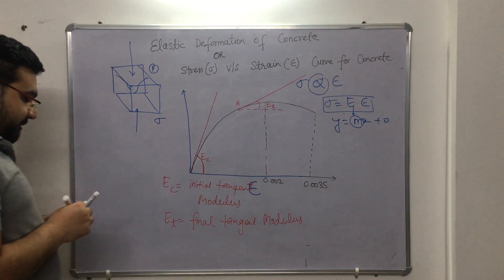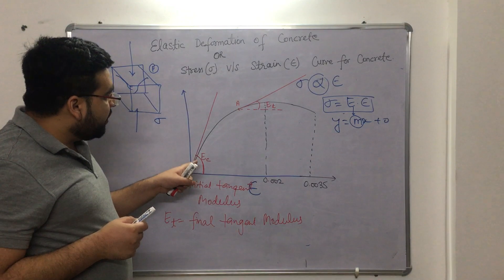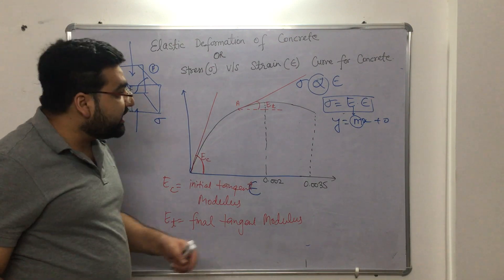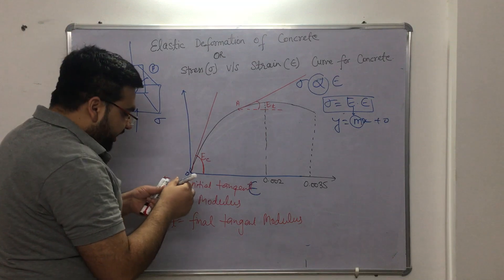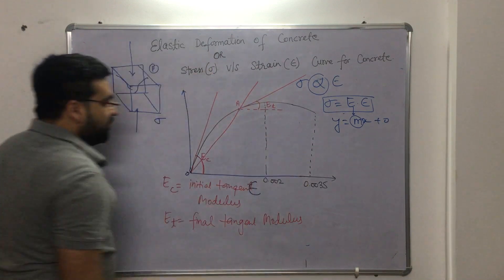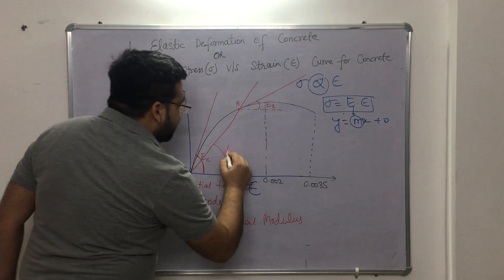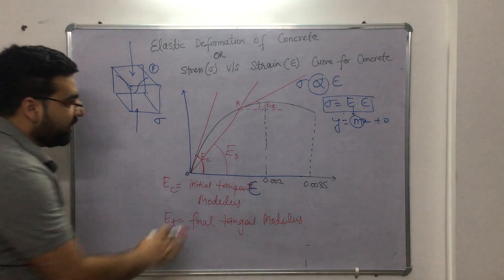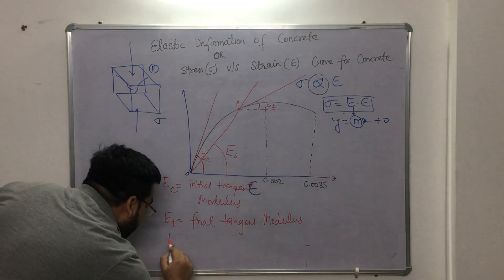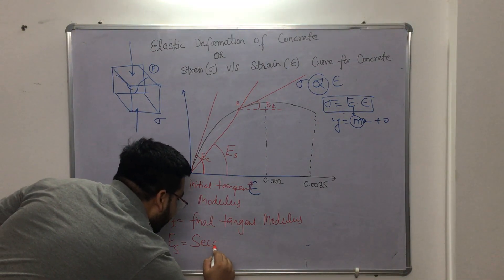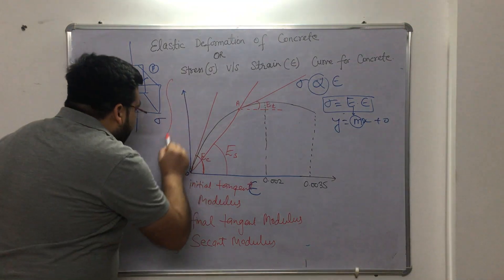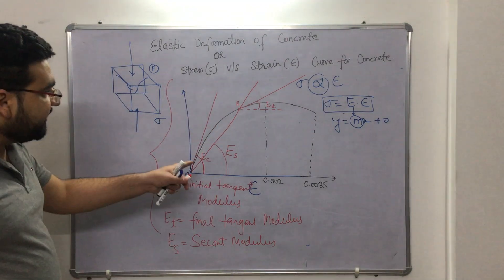Now, one more important thing: the British code uses neither the initial tangent modulus nor the final tangent modulus. Instead, they use another modulus known as the secant modulus. To get the secant modulus, you join the origin to a specific point on the curve. The slope of that line — let's call it Es, also written as E-theta — is the secant modulus. So Es is known as the secant modulus, and this is what the British standards use. This covers the realistic stress-strain curve for concrete.